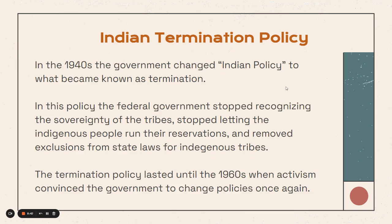In the 1940s, the government changed Indian policy to become what's known as termination. Under this policy, the federal government stopped recognizing the sovereignty of tribes and stopped letting the Indigenous people run the reservations, and removed exclusions from state laws for Indigenous tribes as well. The termination policy lasted until the 1960s, when activism convinced the government to change policies once again. Basically, this was an active effort to destroy tribal society and the original culture of Native Americans.